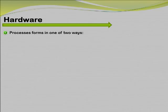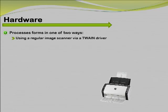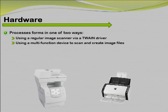You can process your forms in Remark Office OMR in one of two ways. You can use a regular image scanner via a Twain driver or generate image files with a network multi-function machine. Using the software's read wizard, you can then pull these images from your network to collect the data. The information you collect appears just as if it were scanned directly with an image scanner.